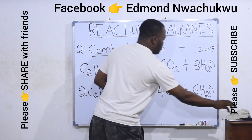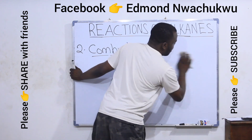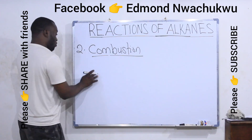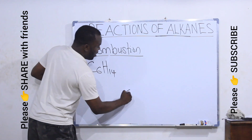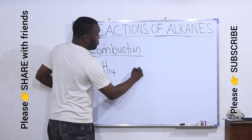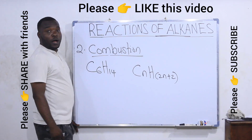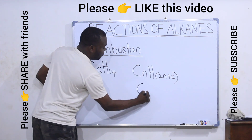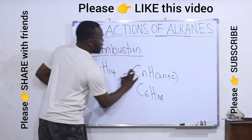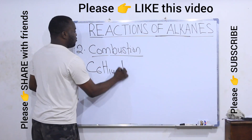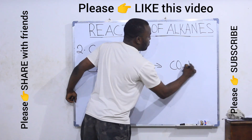Let's take another one — hexane. Let's write a balanced equation for the combustion of hexane. Hexane is C6H14. Using the general molecular formula for alkanes, CnH(2n+2), with n = 6 carbons: two times six is 12, plus two is 14. So hexane is C6H14. If hexane reacts with oxygen gas, we form CO2 plus water.